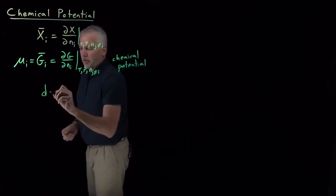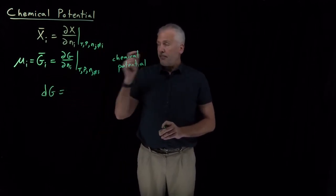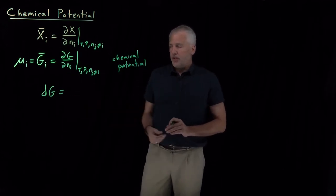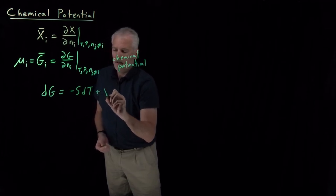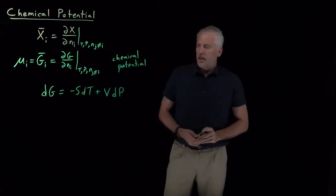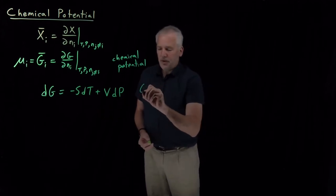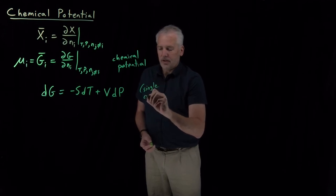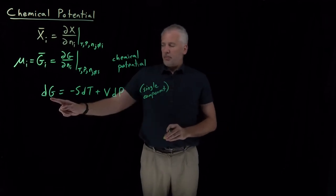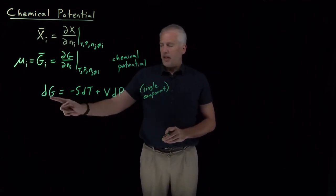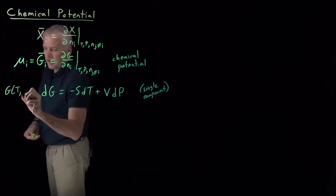We already know the fundamental equation for the Gibbs free energy: dG equals minus S dT plus V dP. That is true for a single component system. This tells us that the natural variables of G are temperature and pressure — we can think of G as a function of T and P in a single component system.